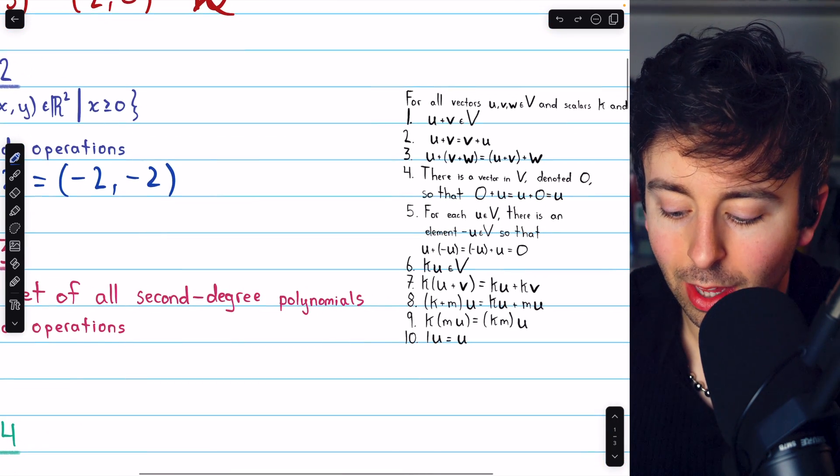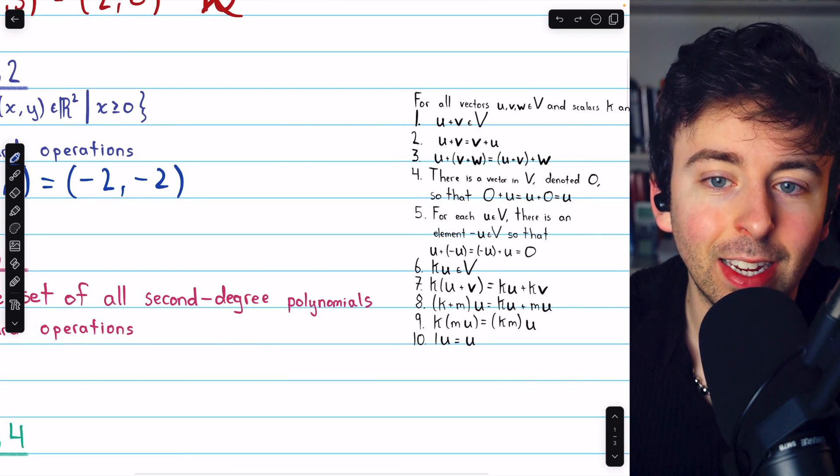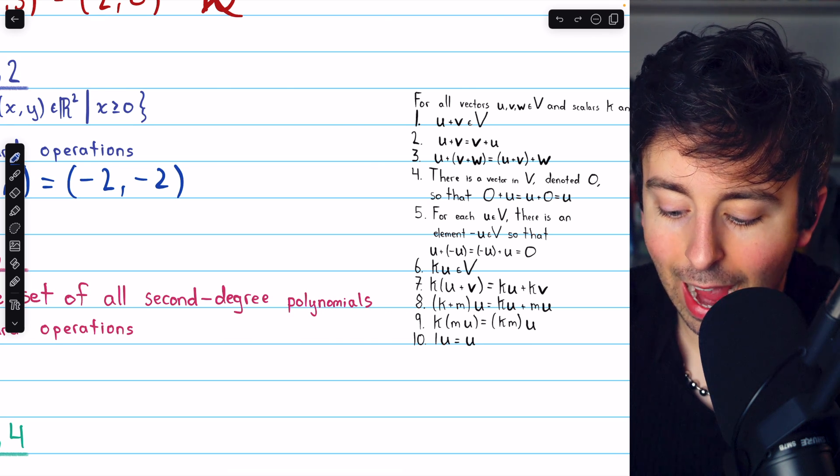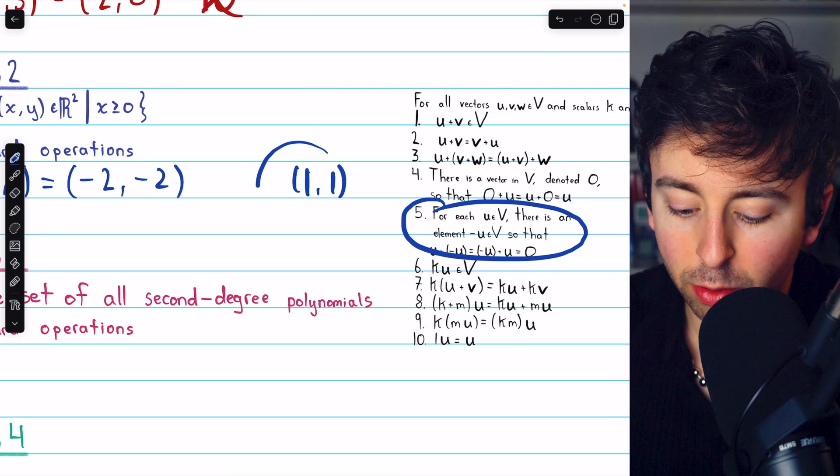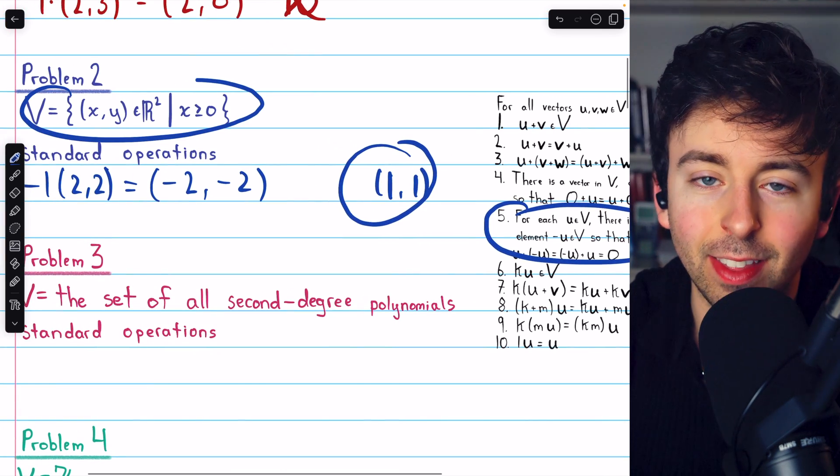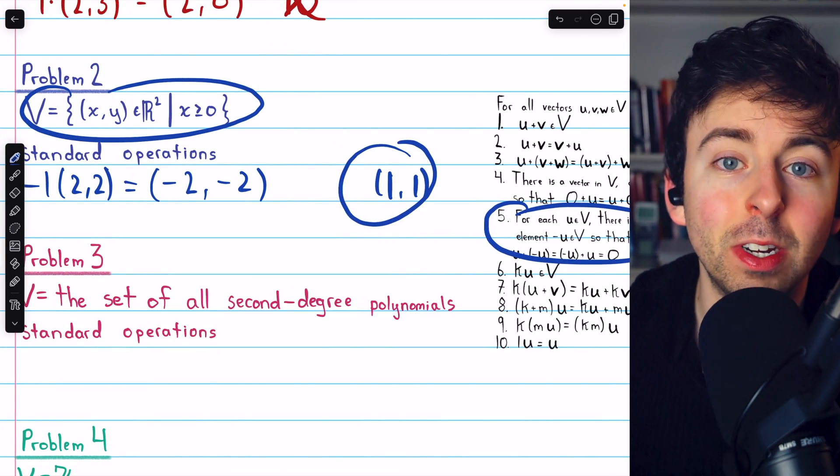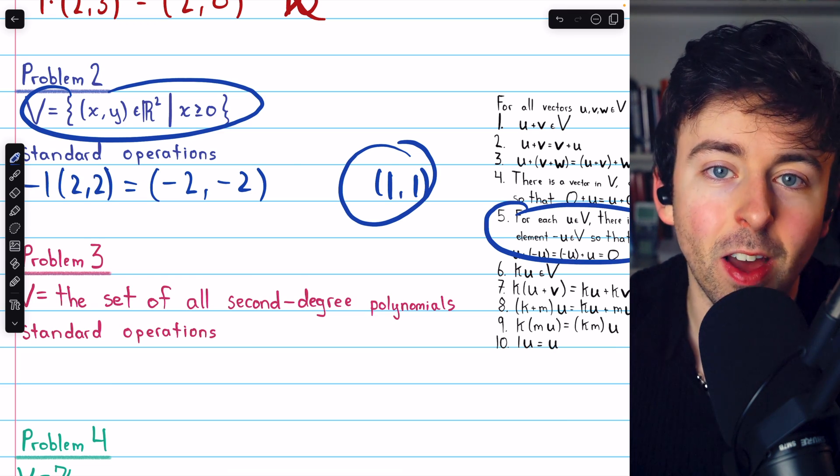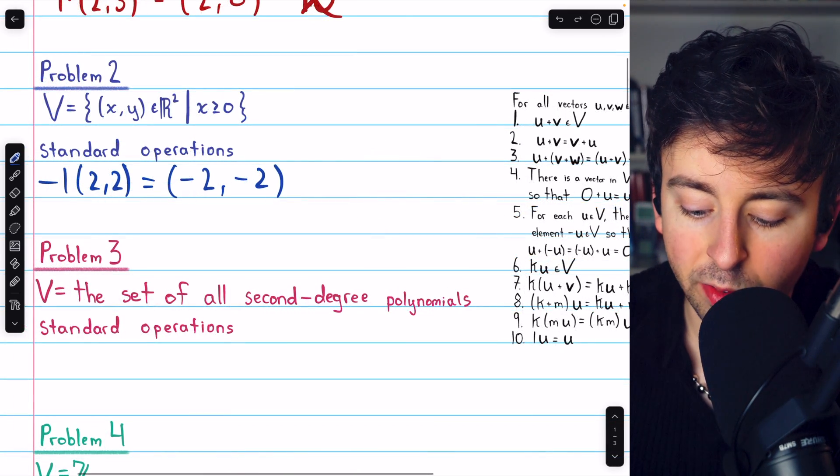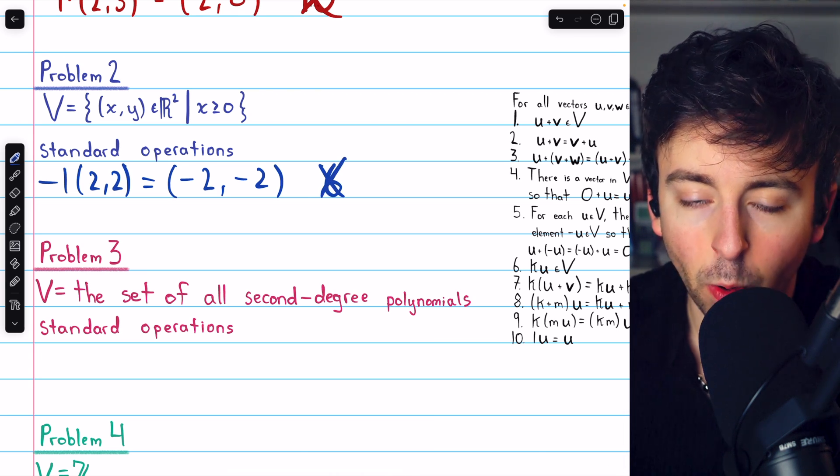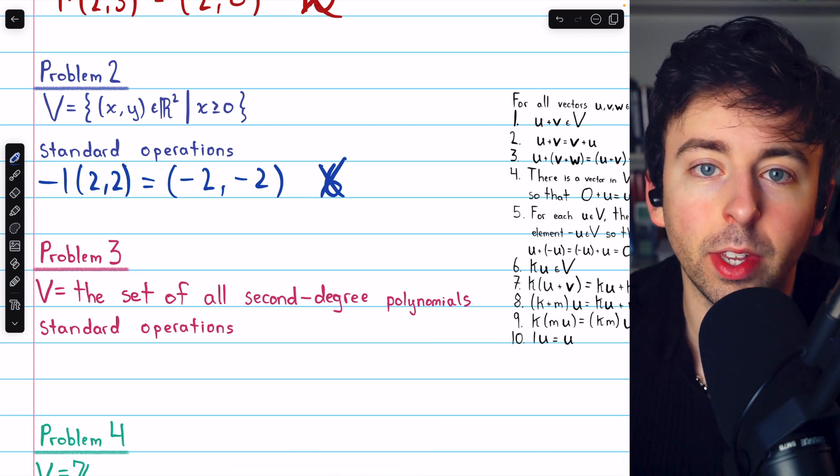We could also point out that there are not inverses in this set, which is axiom 5. If I took the vector (1, 1) for example, there's no inverse of (1, 1) in this set because the vector (-1, -1) is not in the set. Again, it is not a vector space. We showed how it violates axiom 6, though of course there are other axioms you could show that it violates.